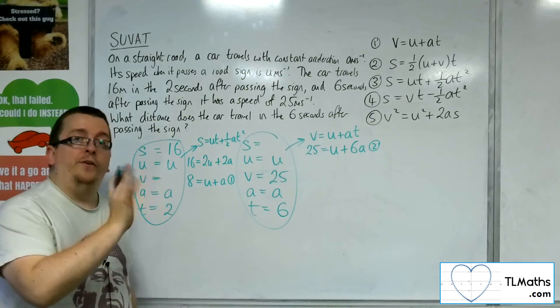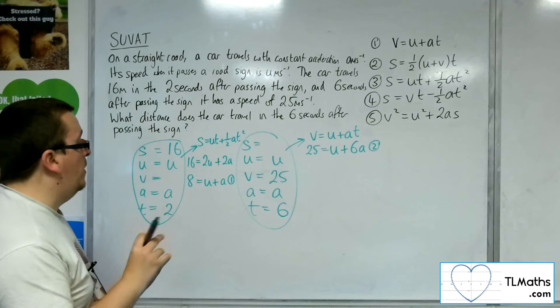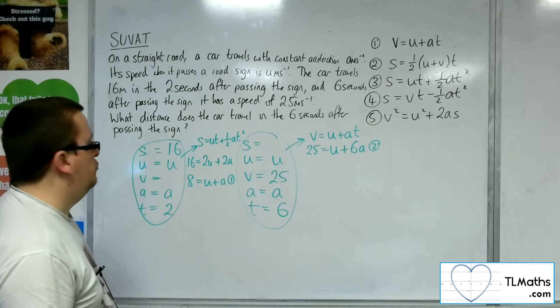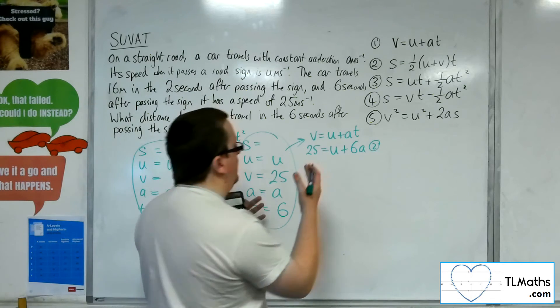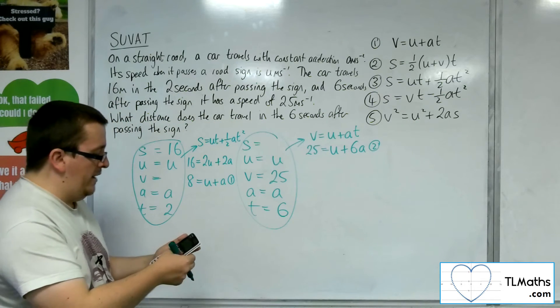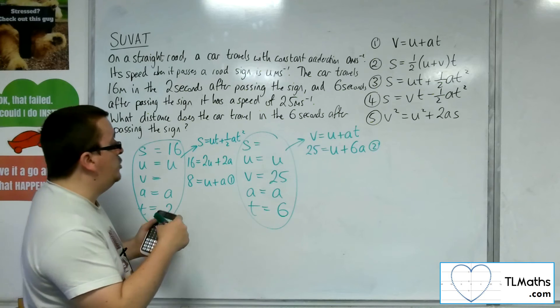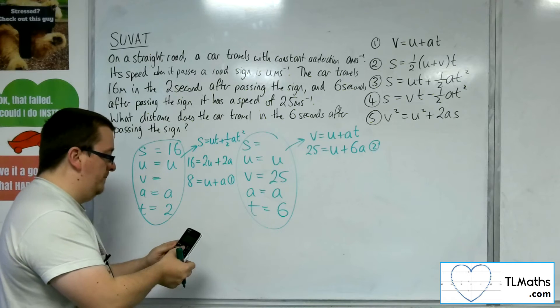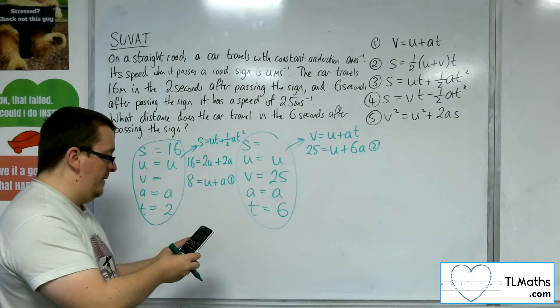So I now have two equations, two unknowns to find the u and the a. What I could do is I could substitute these directly into my calculator. I could use elimination. 2 take away 1, knocks out the u's, work out the a. It's not too challenging to do that. I'm going to go straight to my calculator.